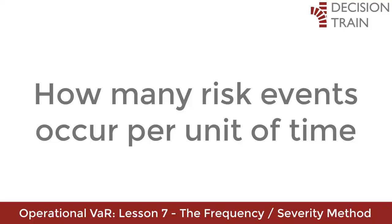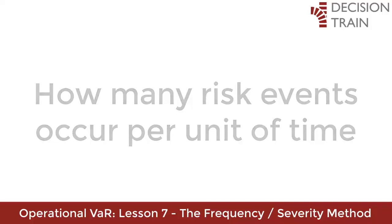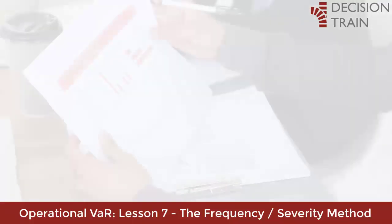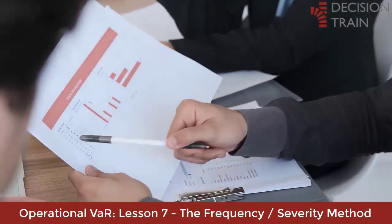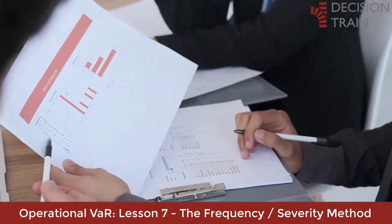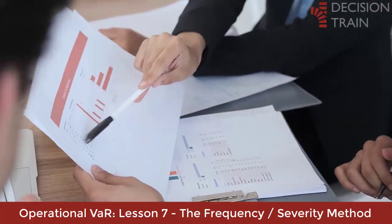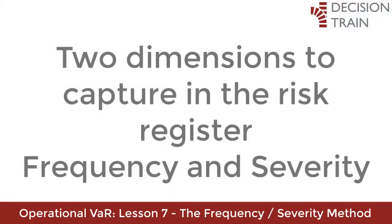Severity — also called impact depending on the country — refers to the cost of a claim. A high-severity claim is more expensive than an average claim, and a low-impact claim is less expensive. When applied to operational risk, we think in terms of the severity or economic impact of the operational risk event, not necessarily the loss in an insurance policy. These are the two dimensions we want to capture.